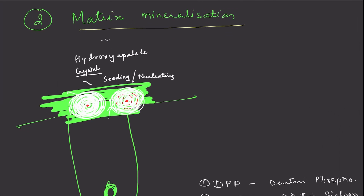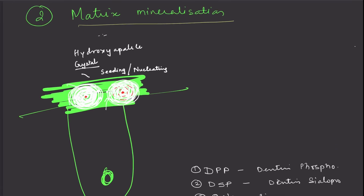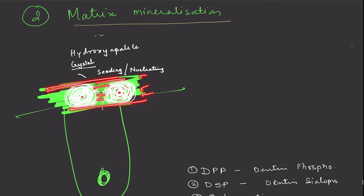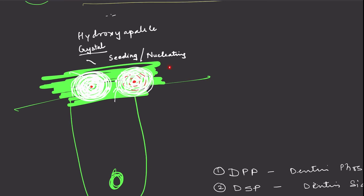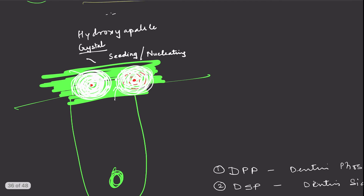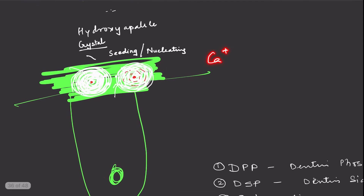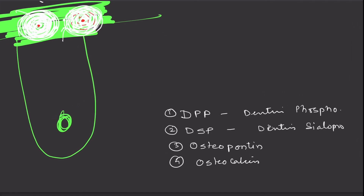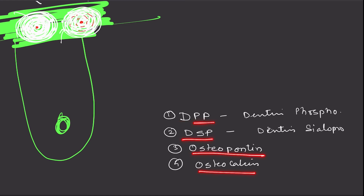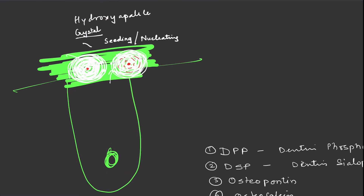The second phase is matrix mineralization. The secreted organic matrix — soft and shown in green — must be calcified by incorporation of minerals in a specific rhythmic manner, mainly forming hydroxyapatite crystals. Mineralization is facilitated by dentine phosphoprotein, dentine sialoprotein, osteopontin, and osteonectin, which help incorporate calcium salts into the pre-dentine matrix.